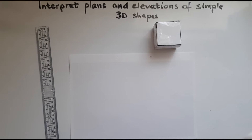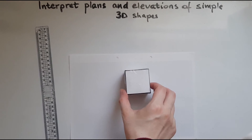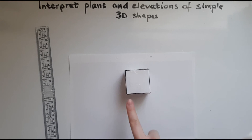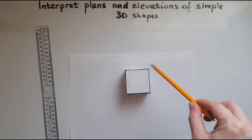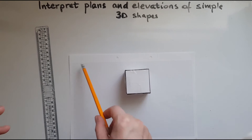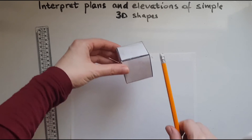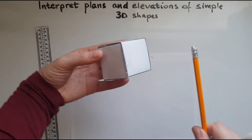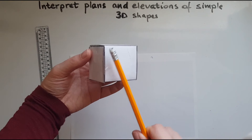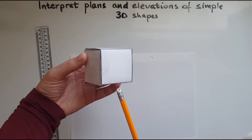Starting with a cube, what does plan mean and what does elevation mean? The plan is whatever you see from the top of the shape. The elevations include the front elevation — whatever you can see at the front — and the side elevation, whatever you can see on the side.